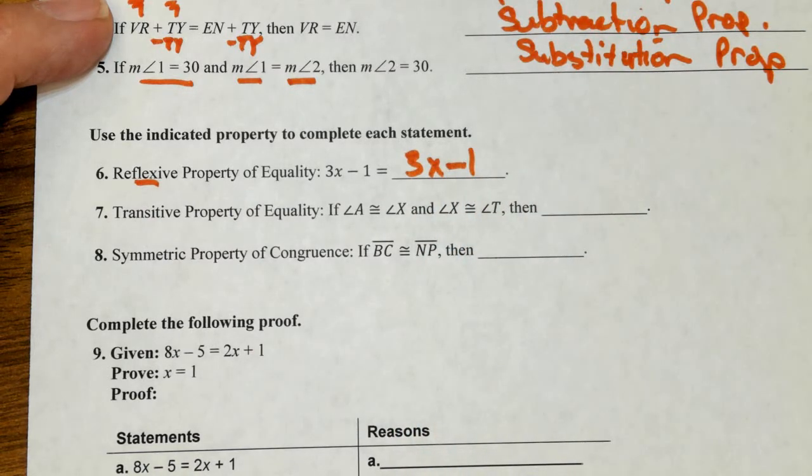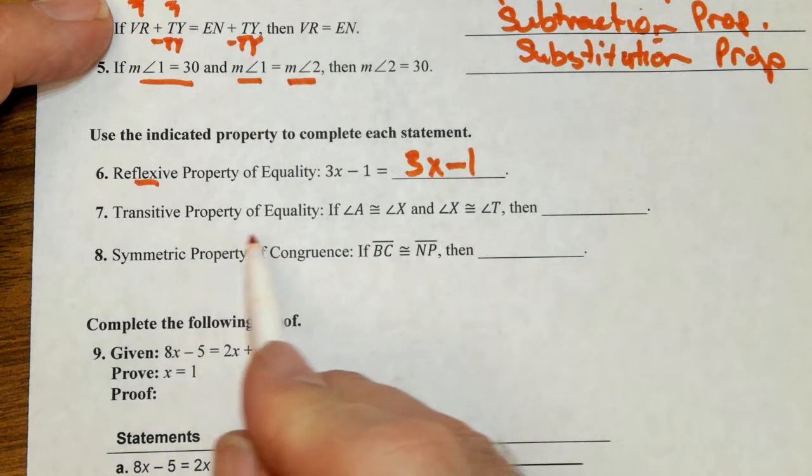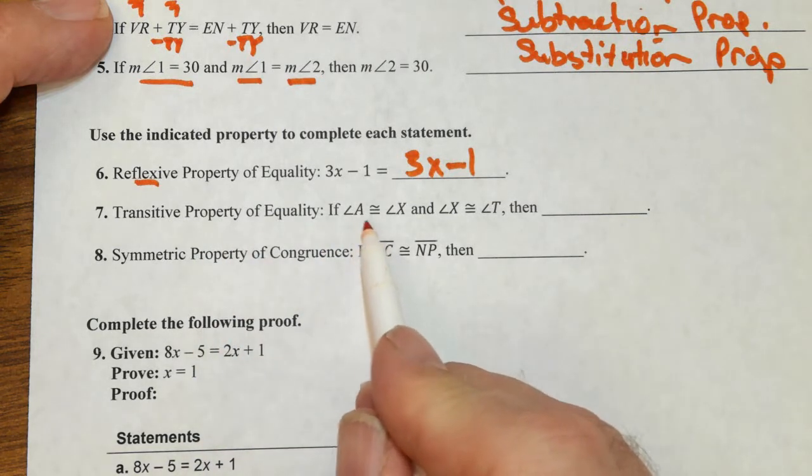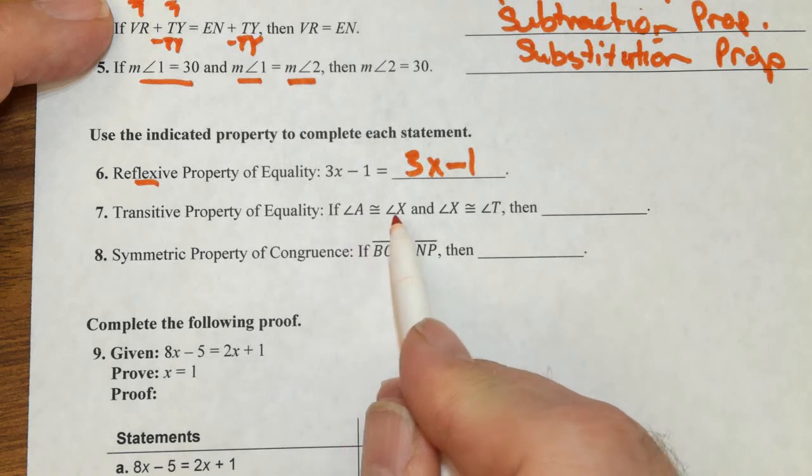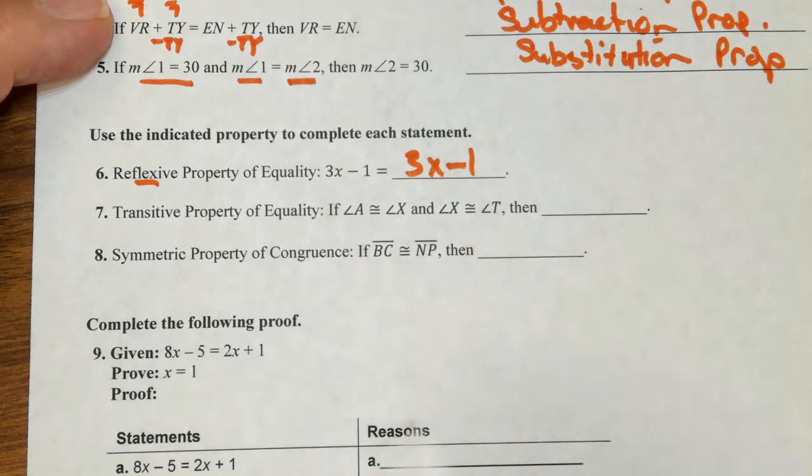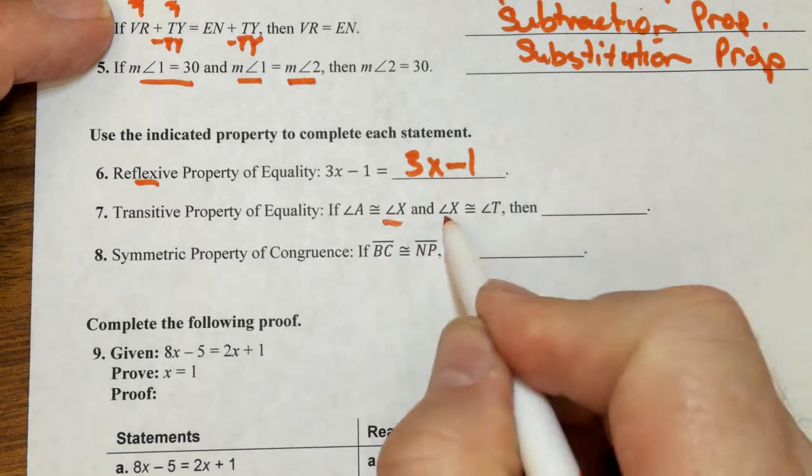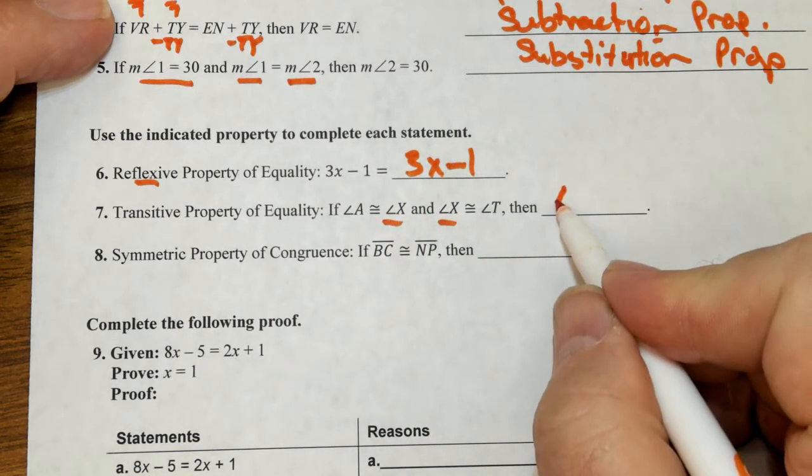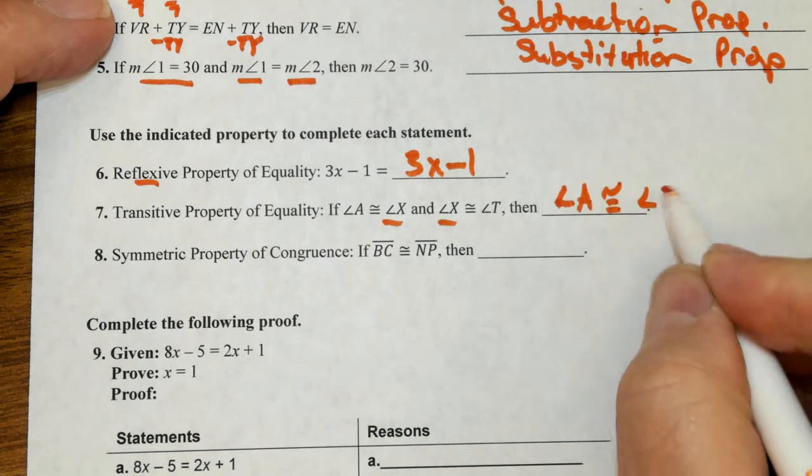Transitive property. It's our justification. So if angle A is congruent with angle X and angle X is congruent with angle T, then angle X is our middleman. So our statement is going to be angle A is congruent to angle T.